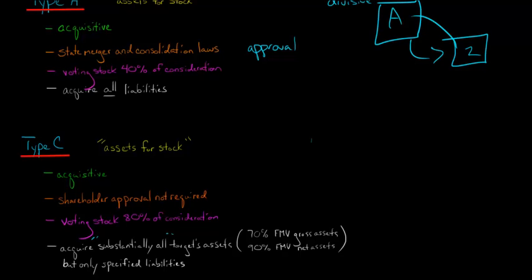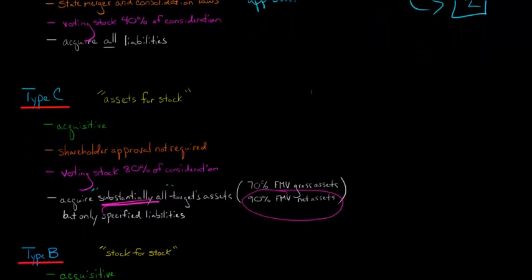Another qualification of Type C is you have to acquire substantially all of the target's assets. What does substantially all mean? It's been defined as at least 70% of the fair market value of the gross assets of the target and at least 90% of the fair market value of the net assets of the target. The good news is that you only have to acquire the liabilities that are specified in the agreement.